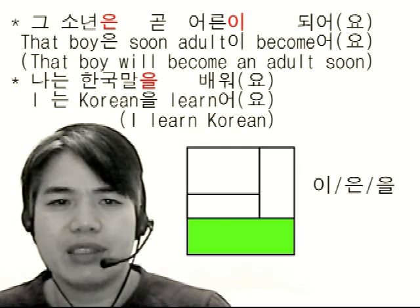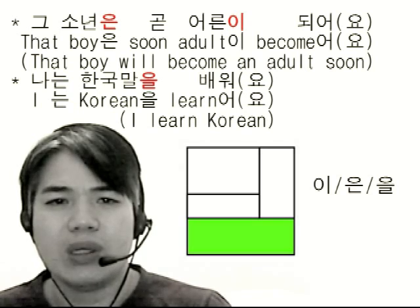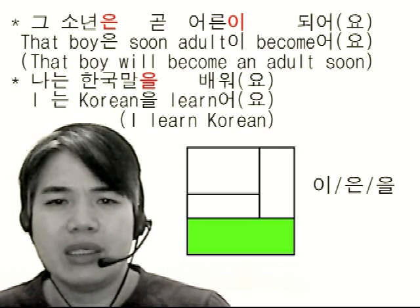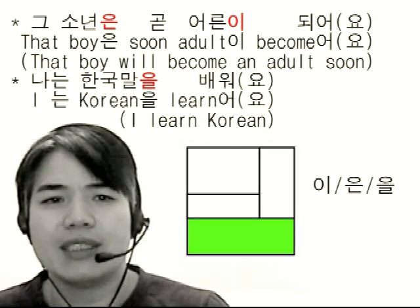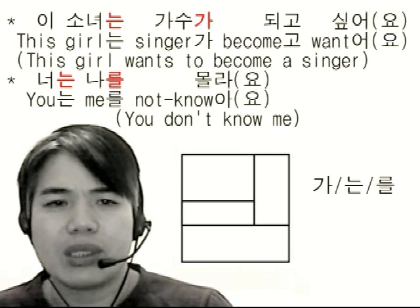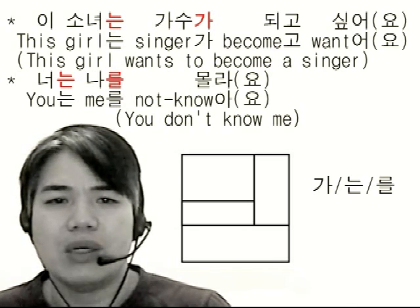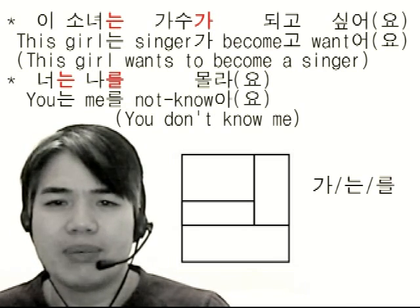The second example: 나는 한국말을 배워요. I 는, Korean 을, learn 어요 — I learn Korean. We use 가, 는, 를 when the previous syllable has no bottom consonant.